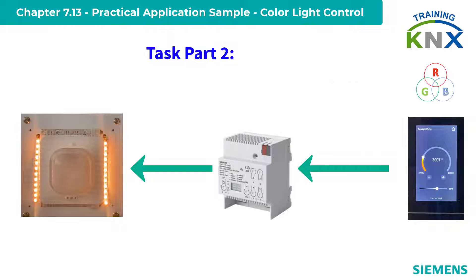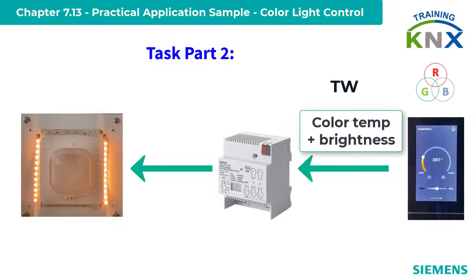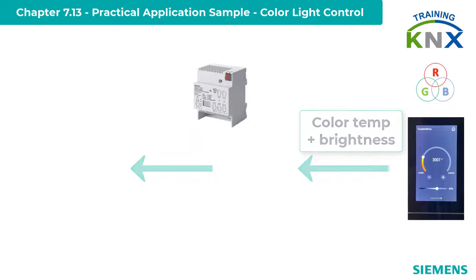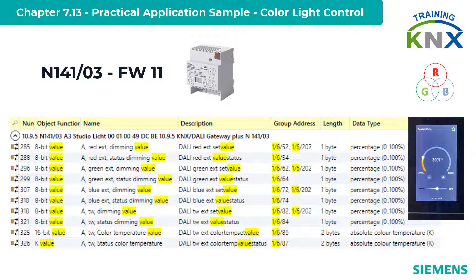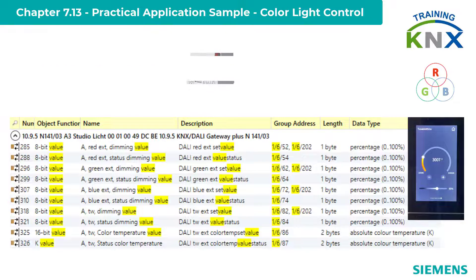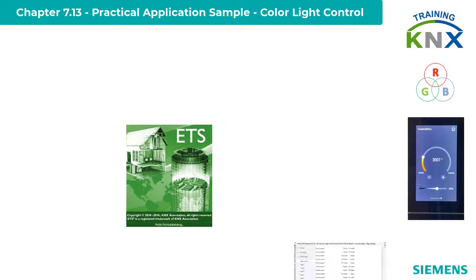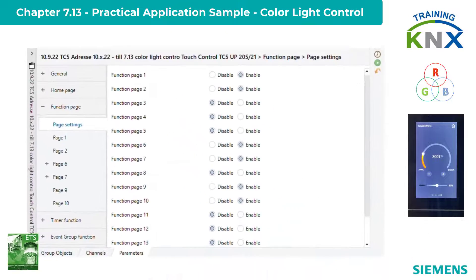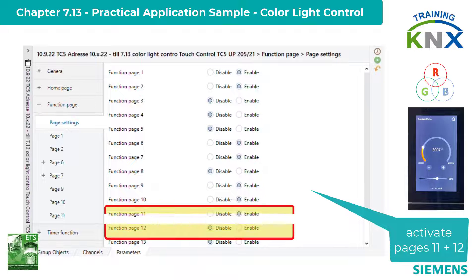As a second step, I will then put a tunable white luminaire into operation via the color temperature. The DALI gateway for this, a Siemens N1-4103 with firmware 11, I have already prepared. In the ETS, I go to the page settings and release pages 11 and 12.